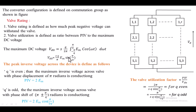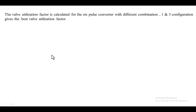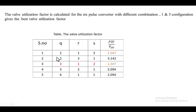Since we know the peak inverse voltage and maximum DC voltage, these expressions are straightforward to evaluate. For a 6-pulse converter, we take different combinations of q, r, and s, and calculate the valve utilization factor for each. Out of all these combinations, the first and third combinations give the best valve utilization. Between those two, we will select one after also studying the transformer utilization factor.